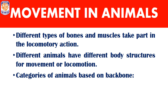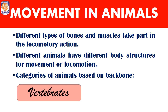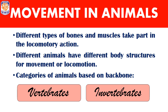The first category is vertebrates — animals that have backbones, for example humans, cats, dogs, and tigers. The second category is invertebrates — animals that do not have a backbone inside their body, for example snails, worms, and cockroaches. Let's discuss a few of these animals one by one.